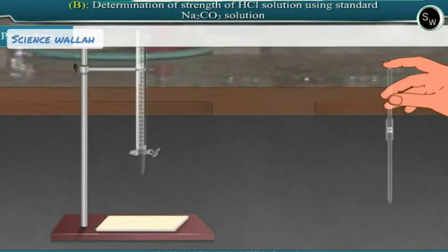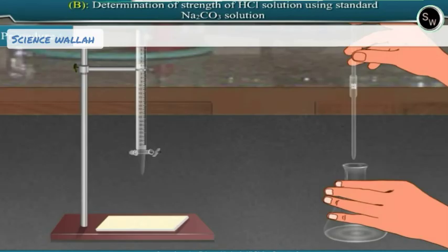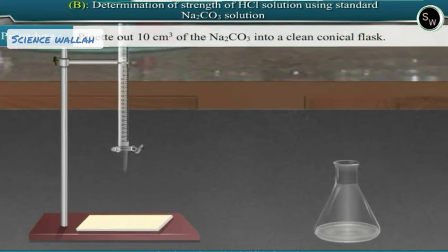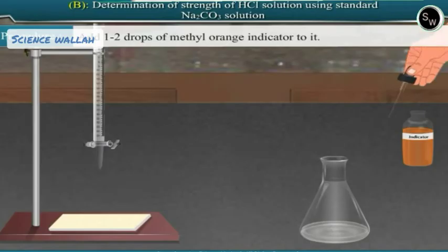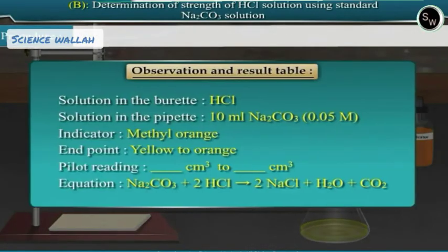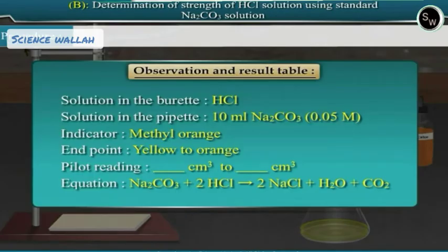Rinse the pipette with the given standard sodium carbonate solution. Pipette out 10 ml of the sodium carbonate into a clean conical flask. Add 1 to 2 drops of methyl orange indicator to it. Prepare the observation table as shown.